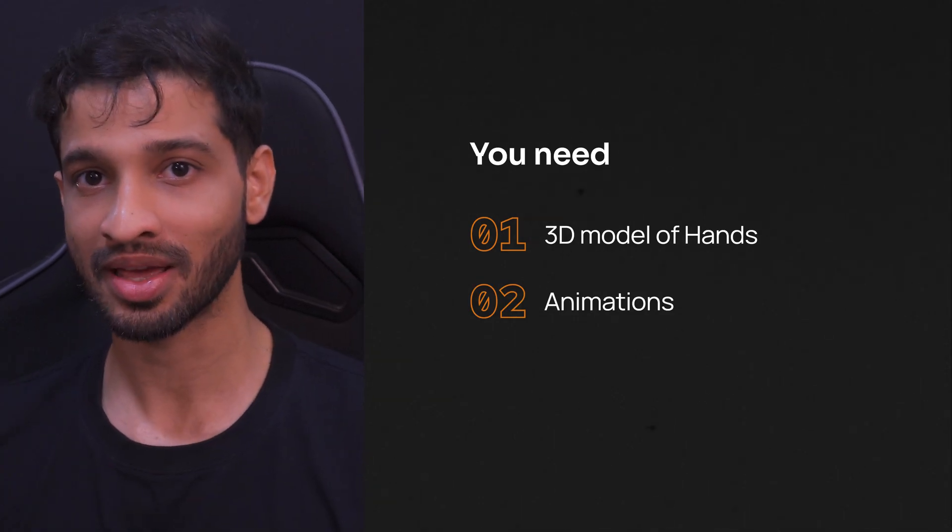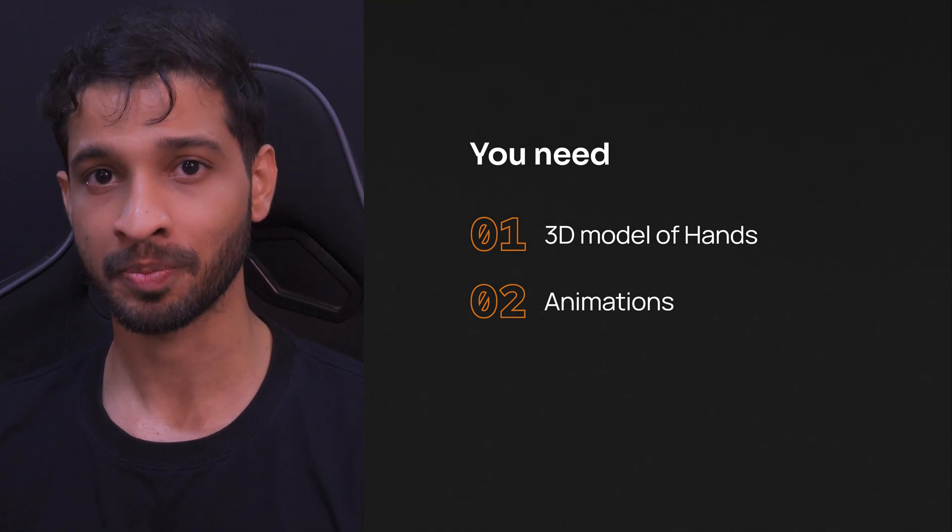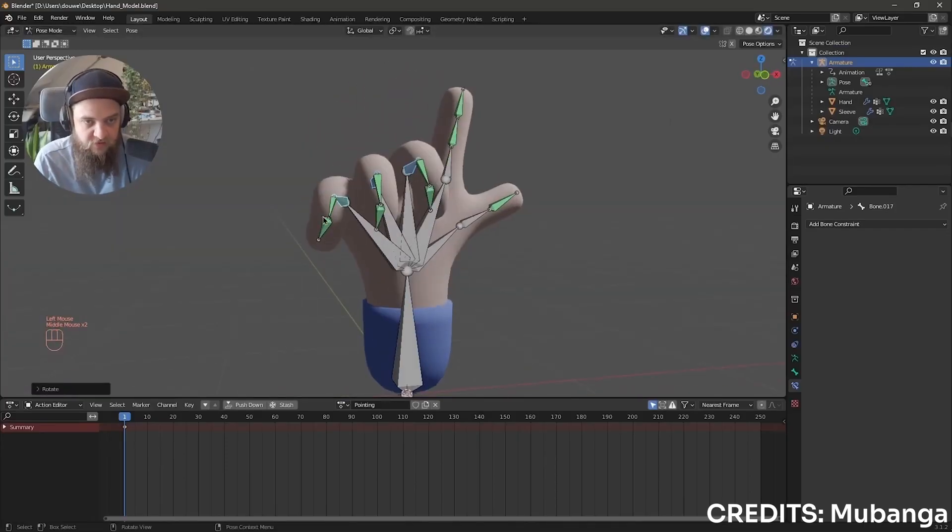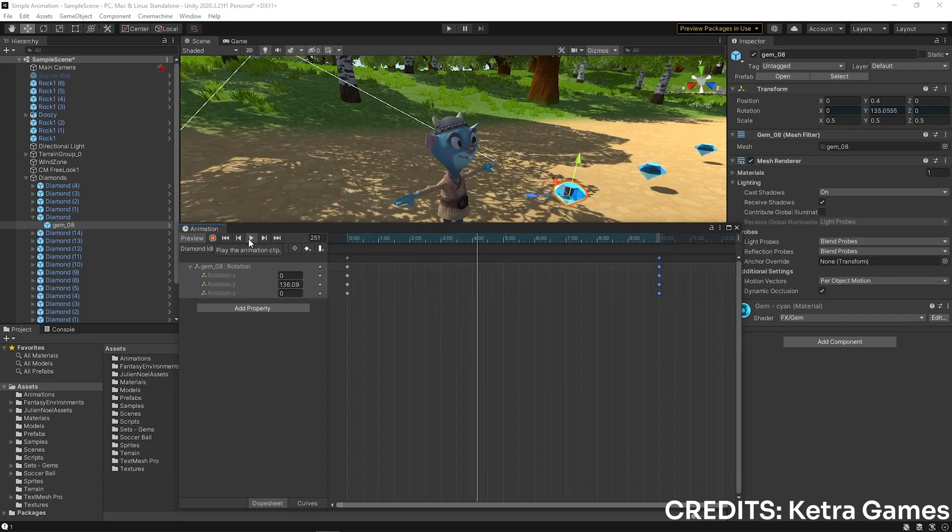Next, you need hand animation, and there are so many ways to animate your hands. You can do it in Blender and export it, or record the animation in Unity itself. What most people do is have three different animations: one for when no button is pressed (the hand in its normal state), one for when the grip button is pressed (all fingers curled), and one for when the trigger is pressed (the index and thumb pinching). Then they set up a blend tree with these three animations and play the animation based on the button and its value.